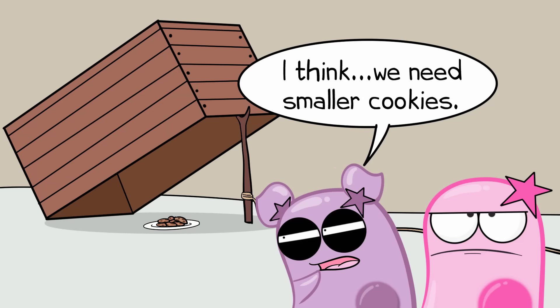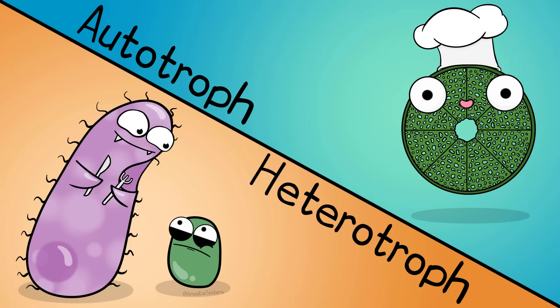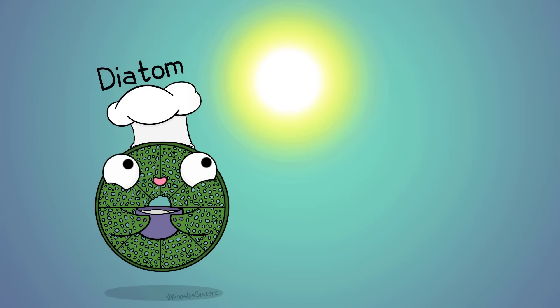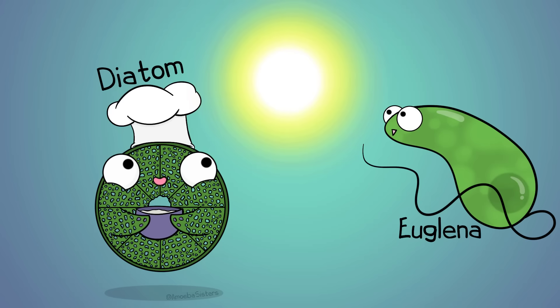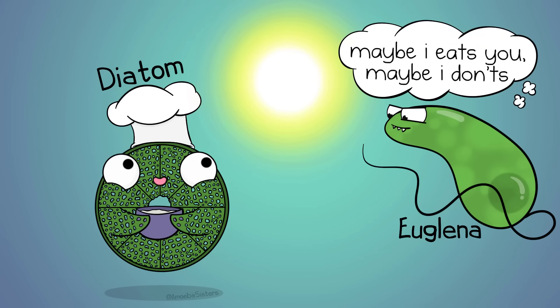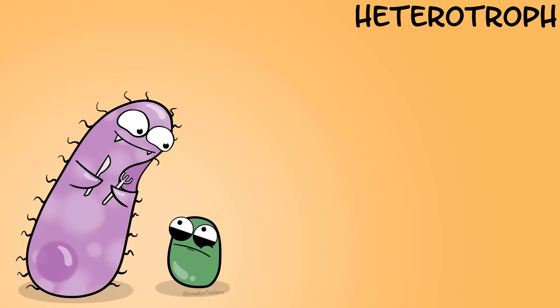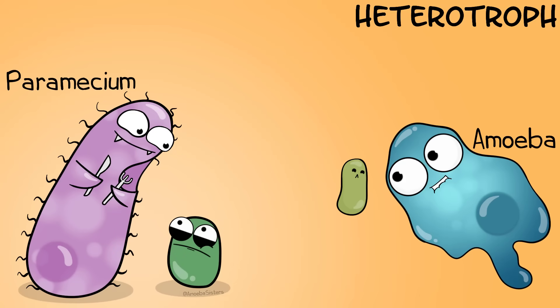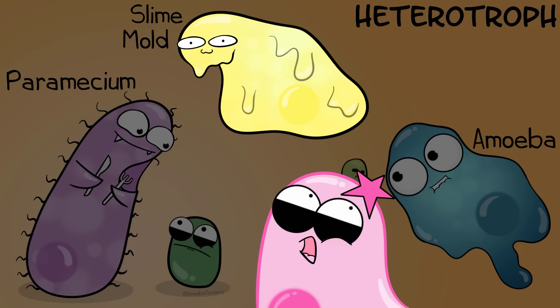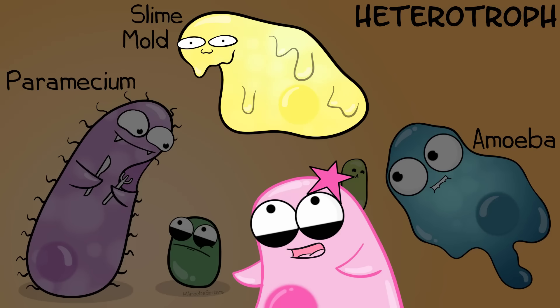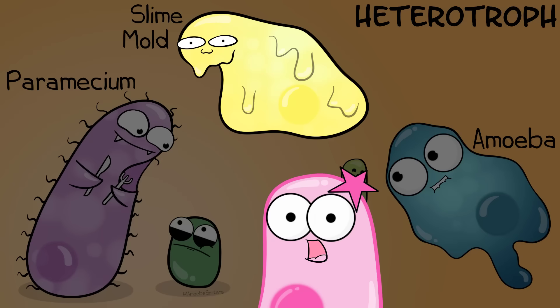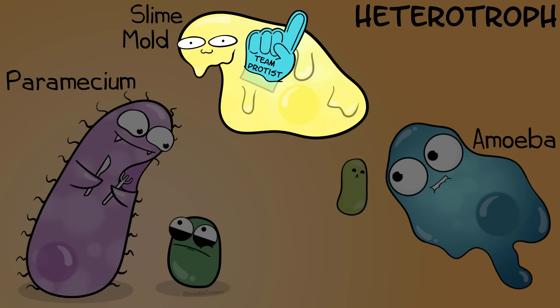If you are trying to find a protist, you would likely want to consider what it eats. Protists can be autotrophs or heterotrophs. Autotrophs make their own food, and in the case of protists, it's common to see photosynthetic autotrophs — this can include diatoms and euglena, though euglena is tricky because it can actually act as a heterotroph too. Heterotroph protists eat other things; amoebas are one, as are paramecia and slime molds, which are protists — not fungi.